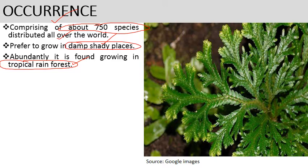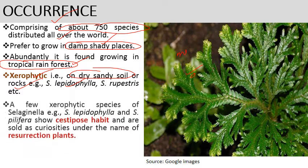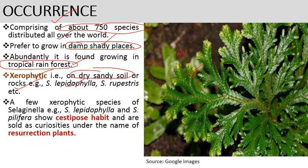It comes under fern allies because its leaves are smaller in size — it is a microphyllous fern. True ferns have pinnately compound leaves. Some exceptions: a few Selaginella species are xerophytic, preferring to grow on dry sandy soil or rock surfaces, for example Selaginella lepidophylla, Selaginella rupestris, and Selaginella pilifera.